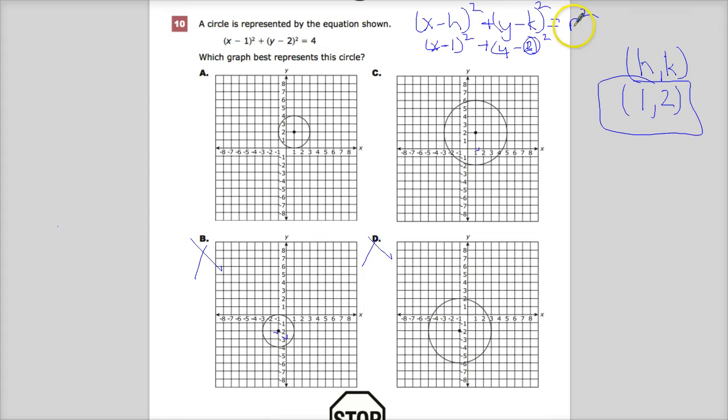I need to find r². Now, 4 is r², so I need to take the square root to find my radius. r equals 2.